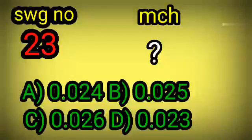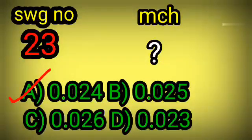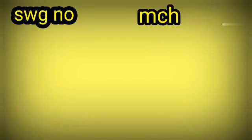SWG number 23, MCH number — question mark. Choose the correct answer: option A 0.024, option B 0.025, option C 0.026, option D 0.023. Your correct answer: option A, 0.024.